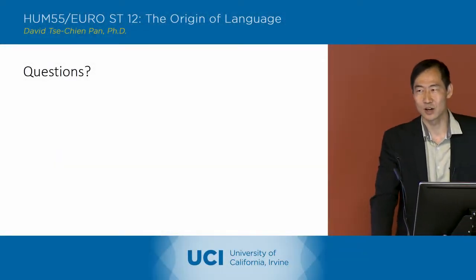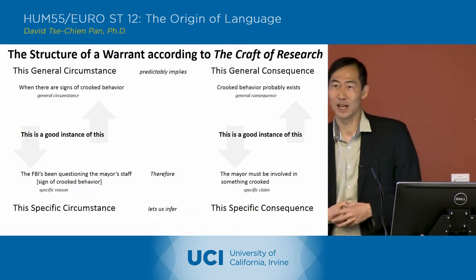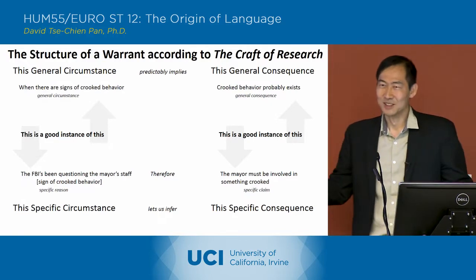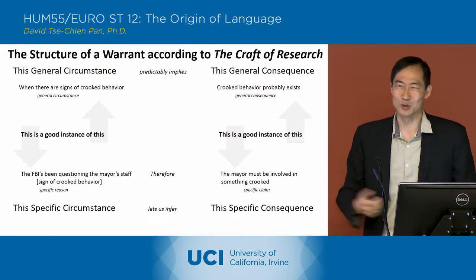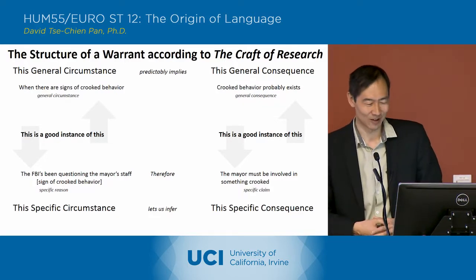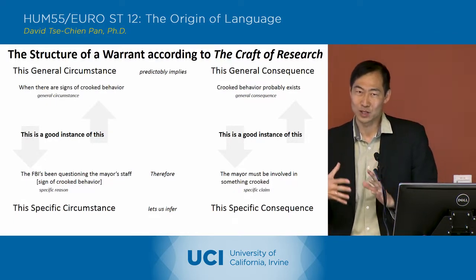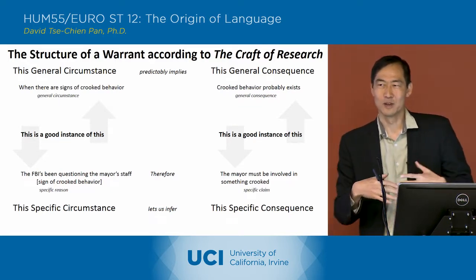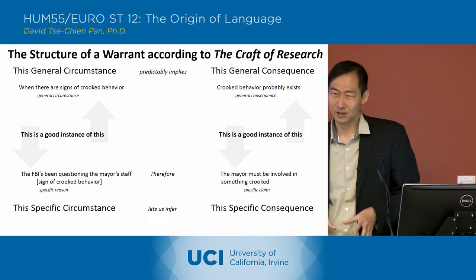Let's start with the diagram they have in the text. This is exactly the diagram from the text when they're trying to describe the warrant. It's a pretty messy, complicated diagram and it's not clear what it's supposed to mean. We're going to go through it piece by piece to reconstruct the argument they're making in the Craft of Research about what the warrant is.